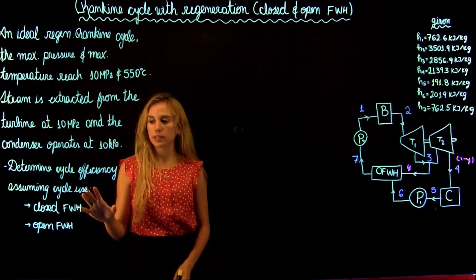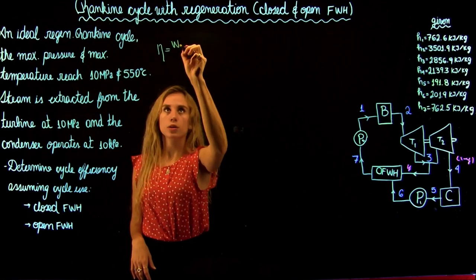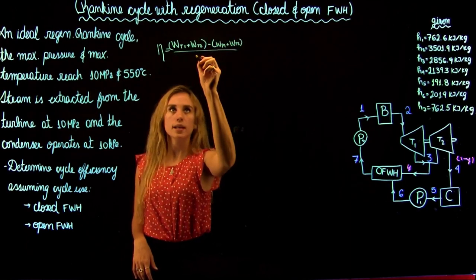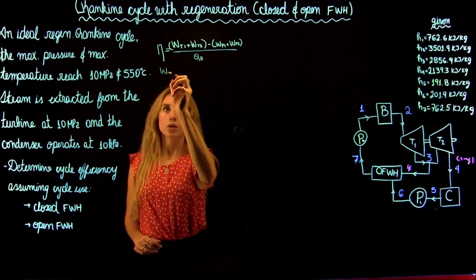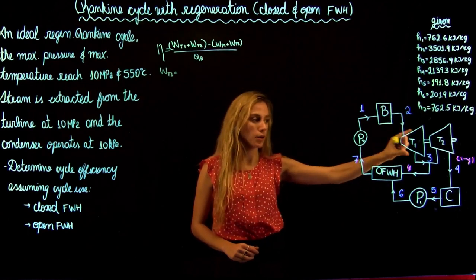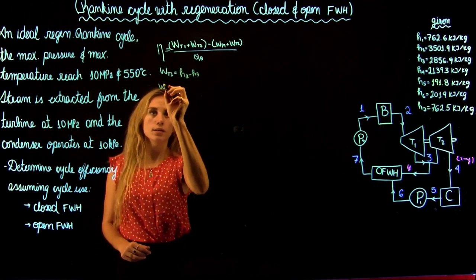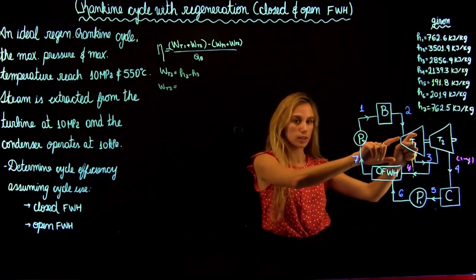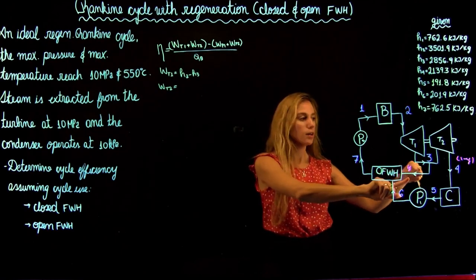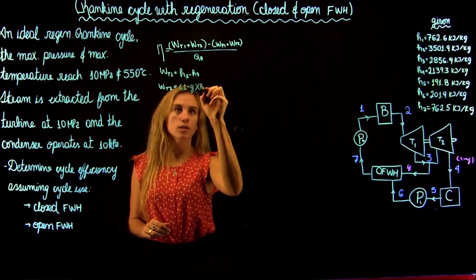Now let's write the equation for the cycle efficiency, which is the net work over the heat input. The net work is the work done by both turbines minus the work input to both pumps, over the heat input in the boiler. The work of the high pressure turbine has 100% of the fluid passing through, so it's H2 minus H3. In the low pressure turbine, after the split, only (1 minus Y) of the flow enters, so it's (1 minus Y) times (H3 minus H4).